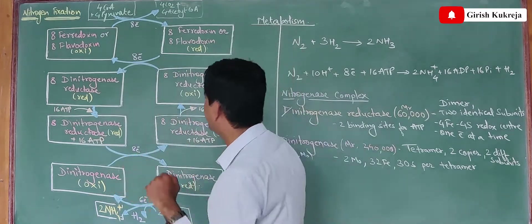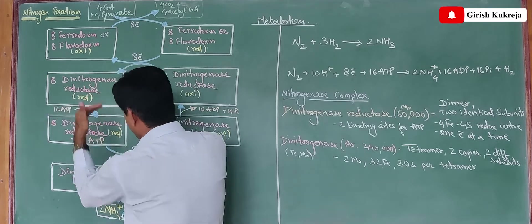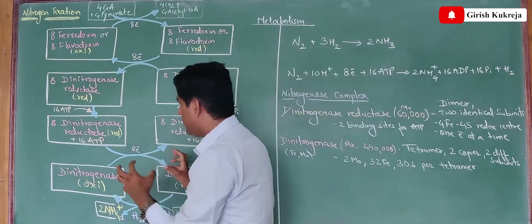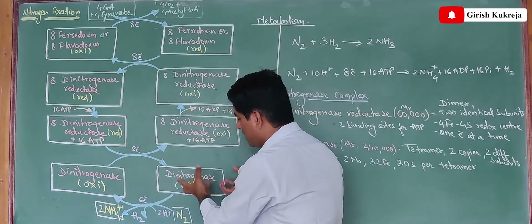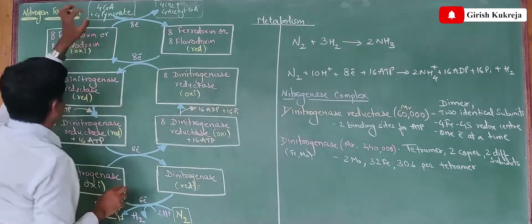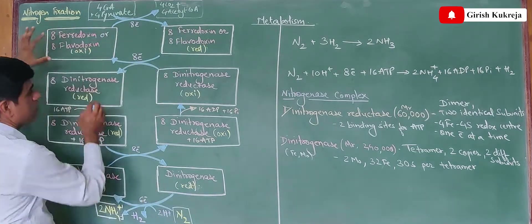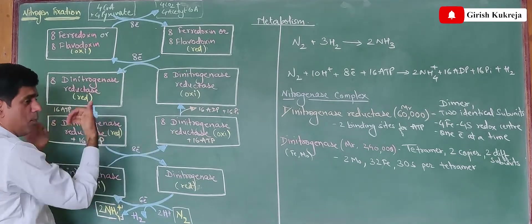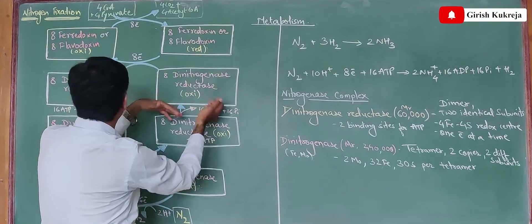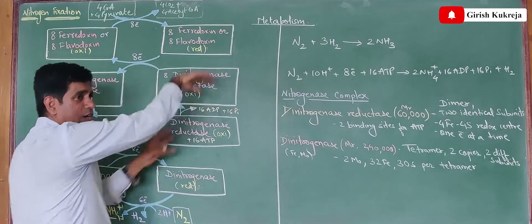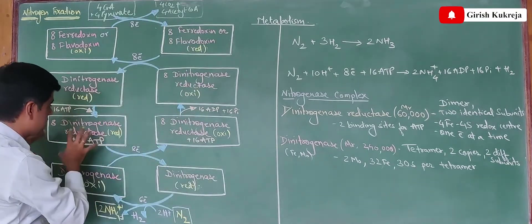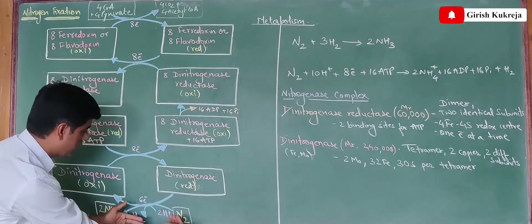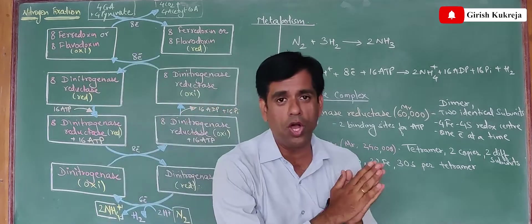Bacteria will hydrolyze those 16 molecules of ATP, and 8 electrons are transferred one by one to dinitrogenase. Now this dinitrogenase tetramer is completely converted into its reduced form, and this reduced form then transfers electrons to nitrogen. A quick summary: from pyruvate, electrons transferred to ferredoxin, ferredoxin goes from oxidized to reduced form, then dinitrogenase reductase accepts the electron, hydrolyzes ATP, becomes a good reducing agent, goes back, again accepts an electron, binds ATP, becomes a good reducing agent, donates the electron. Once dinitrogenase is completely reduced, it transfers electrons to nitrogen, converting it into ammonia.